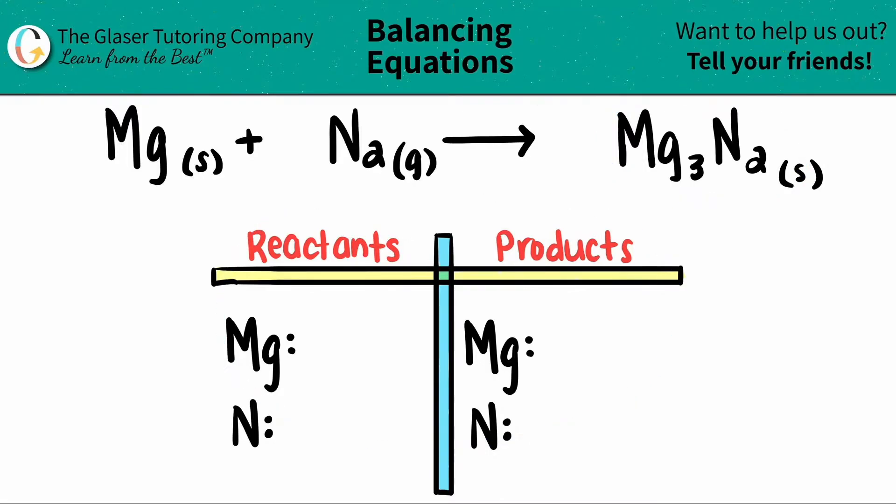I already wrote us a little chart of our left-hand side and our right-hand side, as well as the elements that I see on both sides. All we have to do is just say how many we have of each, and then we can get started with the balancing. Let's start with the left side.